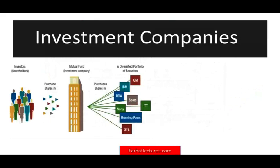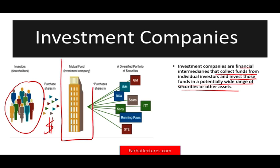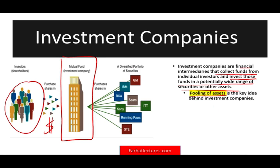Let's talk about investment companies. What are investment companies? Investment companies are financial intermediaries that collect funds. Investors give them money, and they invest those funds in potentially a wide range of securities. Most investment companies take the form of a mutual fund. They pool money together — the key is the pooling of assets — and they can buy many different stocks that an individual investor could not buy on their own.